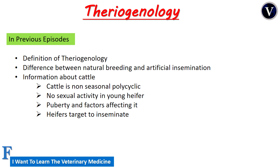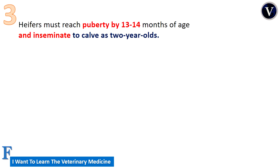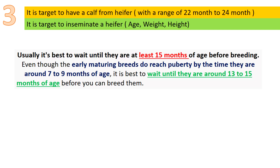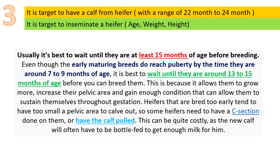Before we begin episode 3, I want to clarify a hint related to episode 2 part 2. At the beginning I said that a heifer must reach puberty and be inseminated at 13 to 15 months of age, but what I mean is insemination only. At the end of that video I said that a heifer reaches puberty by nine months, but we wait until the heifer reaches 15 months of age, and I explained the reason why.